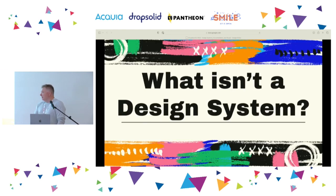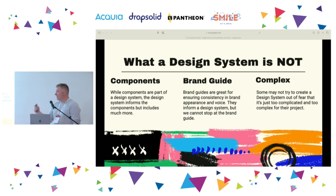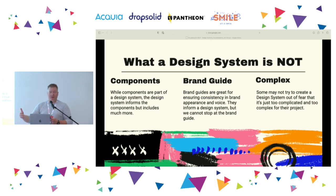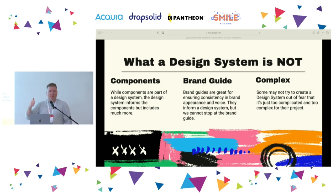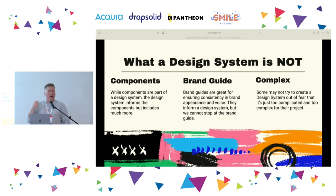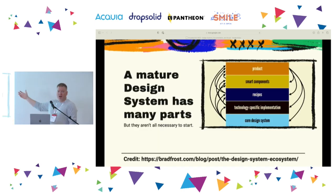What is a design system? First, let's talk about what it's not. A design system is not just components — components are part of a design system but not the whole thing. If you have a component library, you're on the path but don't stop there. A brand guide with a logo and colors is a step in the right direction but you're not quite there either. And a design system does not have to be complex.